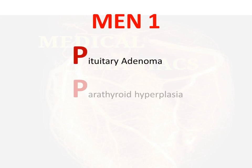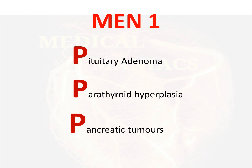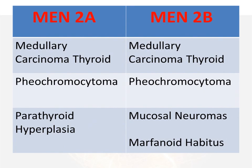To summarize: MEN1 has the three Ps — pituitary adenoma, parathyroid hyperplasia, and pancreatic tumors. MEN2A and MEN2B share medullary carcinoma of thyroid and pheochromocytoma. The differentiating feature is parathyroid hyperplasia in MEN2A, while mucosal neuromas and marfanoid habitus are present in MEN2B.